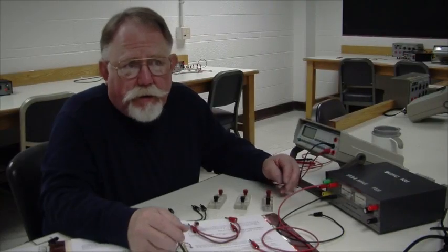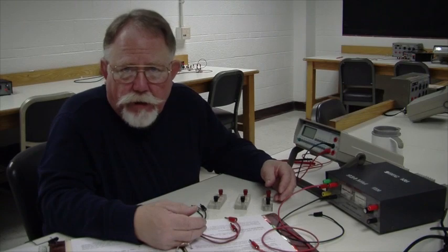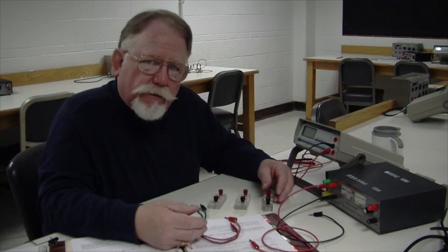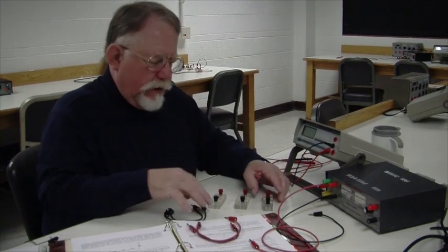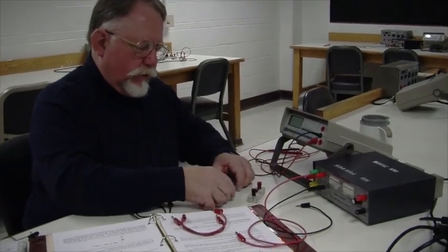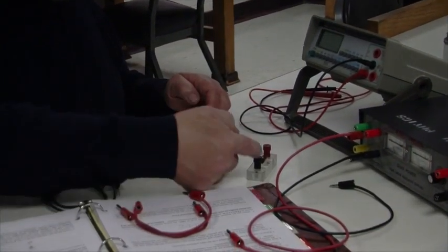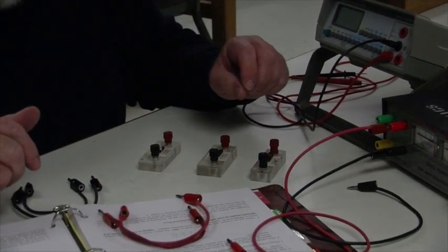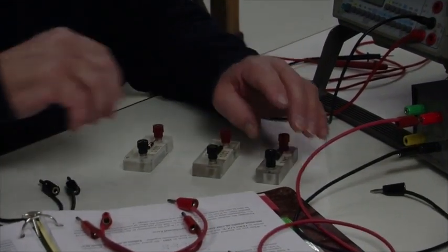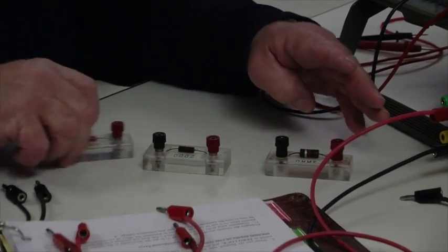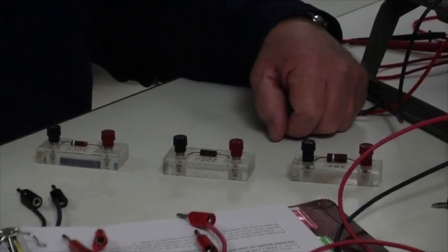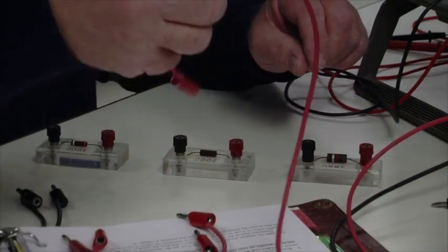The other type of connection that you can make in a circuit is called a series connection. And instead of having the resistors arranged like this, connected down here and down here, like we did in the parallel circuit, we arrange the resistors like this. And we sort of string them together like a necklace.